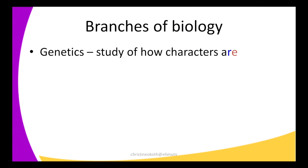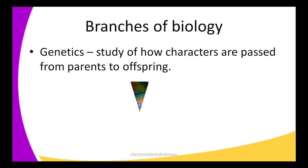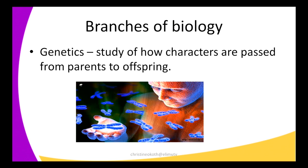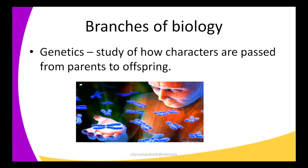The next branch of biology is genetics — a very interesting topic. Genetics is basically the study of how characters are passed from parents to offspring. There are some characters that a parent has that are passed down — for example, if a father or mother has brown eyes, one of the children is likely to have brown eyes too. What brings about this transmission of characters is mainly studied in the branch of biology we call genetics.